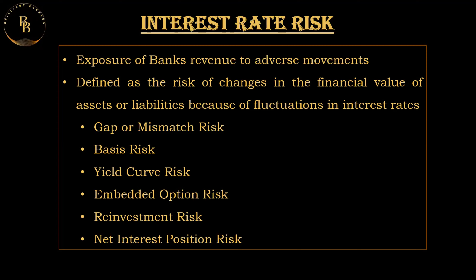In the second scenario where the interest rate increases, say after a few years the market interest rate rises to 6%. However, the bond's coupon rate is fixed at 4%, making it less attractive to new investors who can obtain higher yields on newer bonds. You still receive the same ₹40 in interest payments annually since the coupon rate is fixed, but the market value of your bond declines because new bonds with higher coupon rates are now available. If you decide to sell before maturity, you might receive less than the face value of ₹1,000.